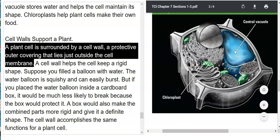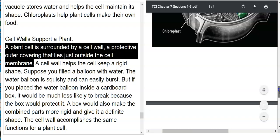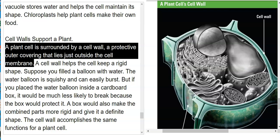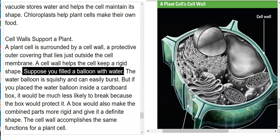A plant cell is surrounded by a cell wall, a protective outer covering that lies just outside the cell membrane. A cell wall helps the cell keep a rigid shape.